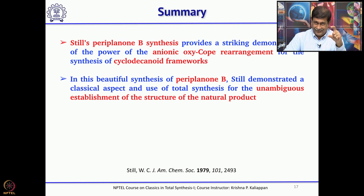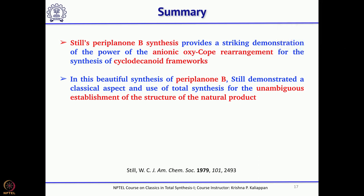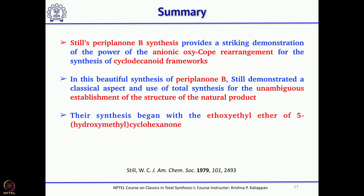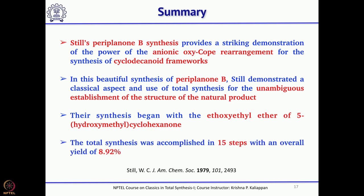Overall, in this first total synthesis of Periplanone B reported by W.C. Still, he used anionic oxy-Cope rearrangement followed by Rubottom oxidation as the key reaction to introduce the alpha-hydroxy ketone. Overall, he took about 15 steps and the combined yield was about 9 percent, which is remarkable considering the dense functional groups present in this natural product.